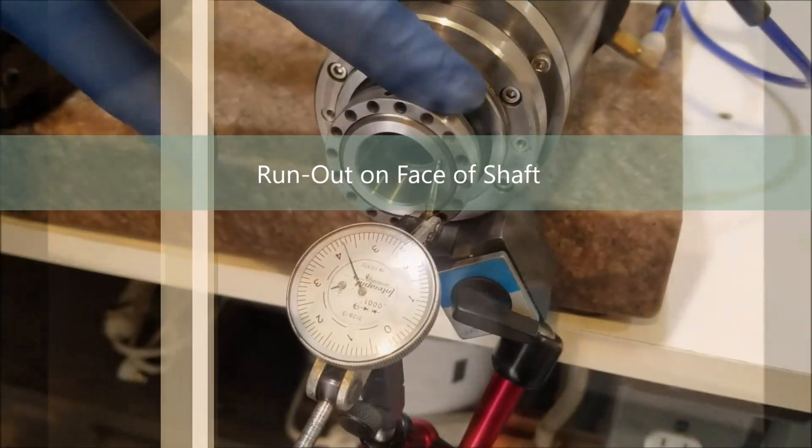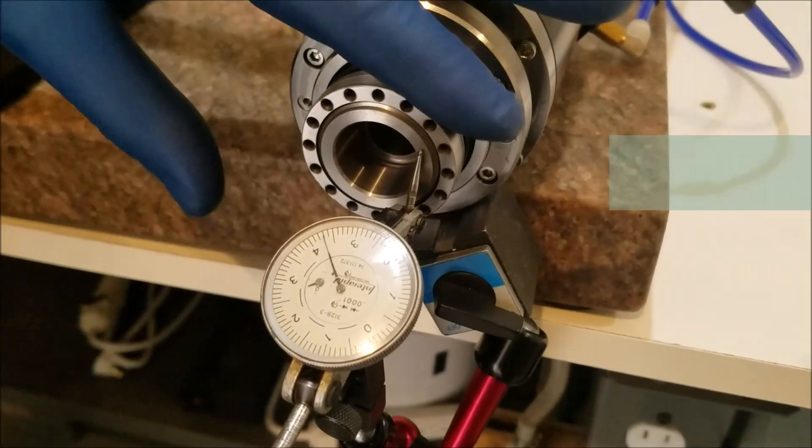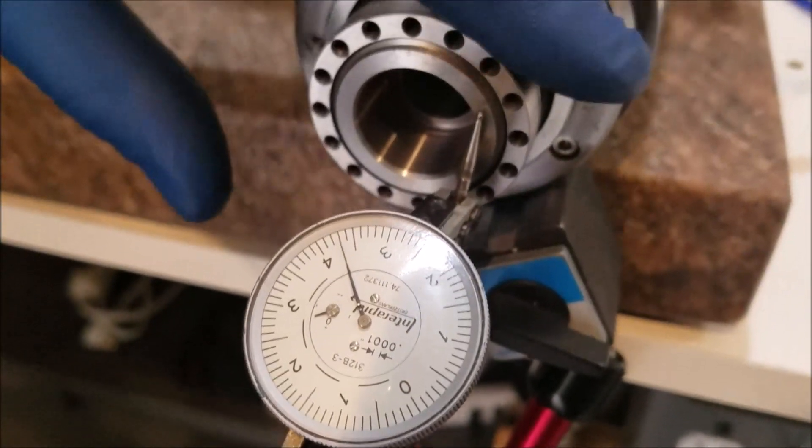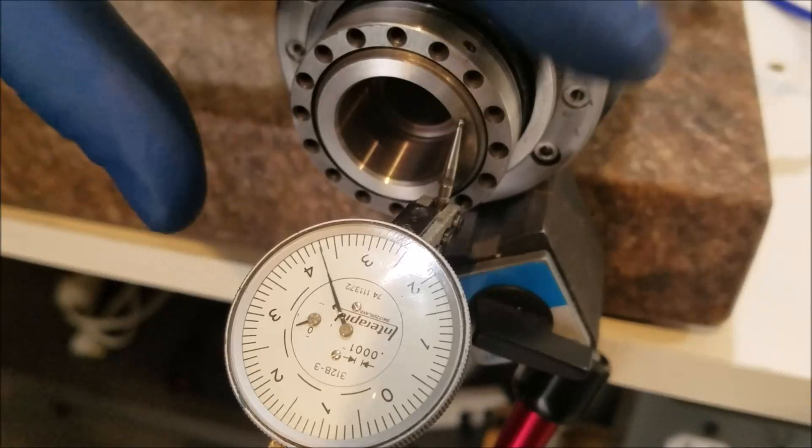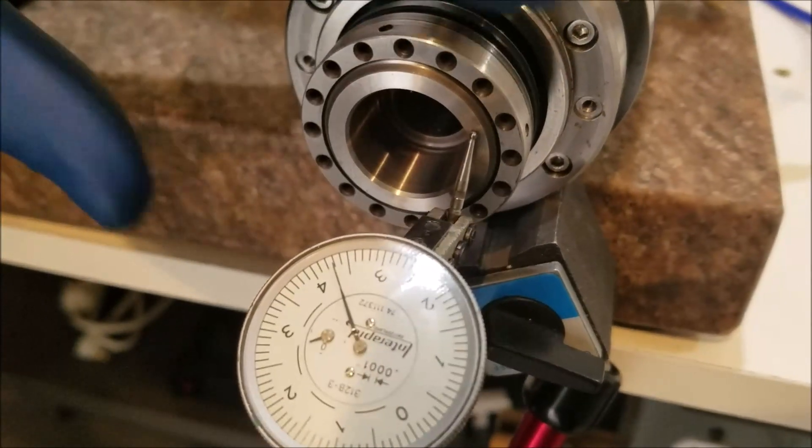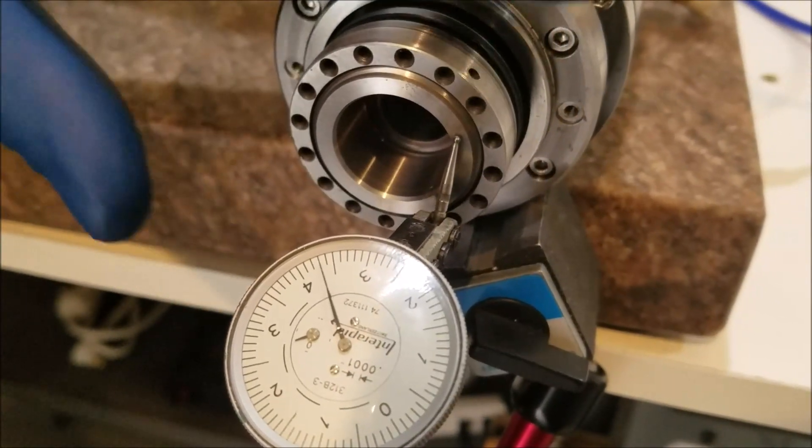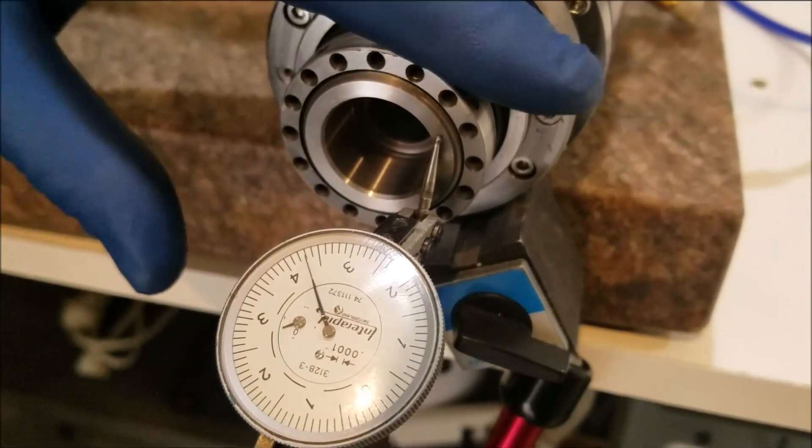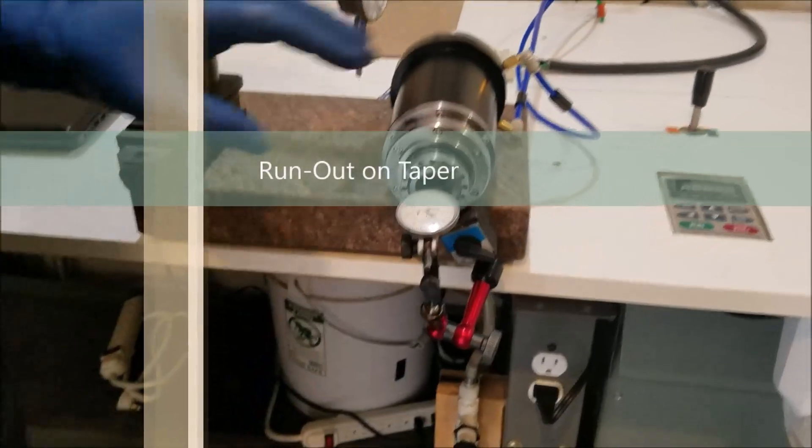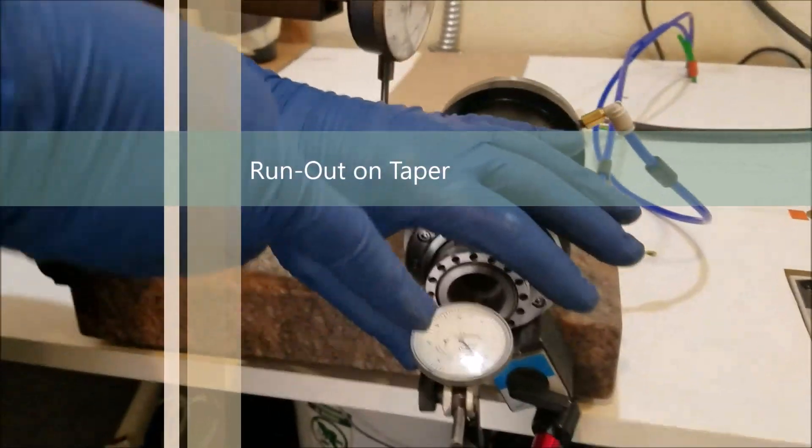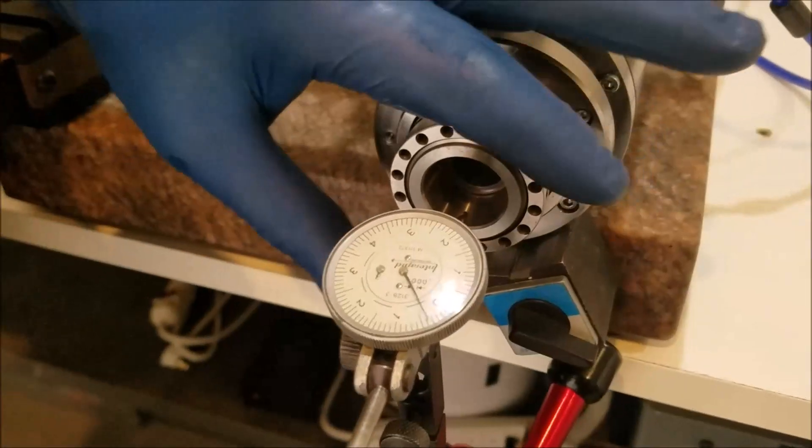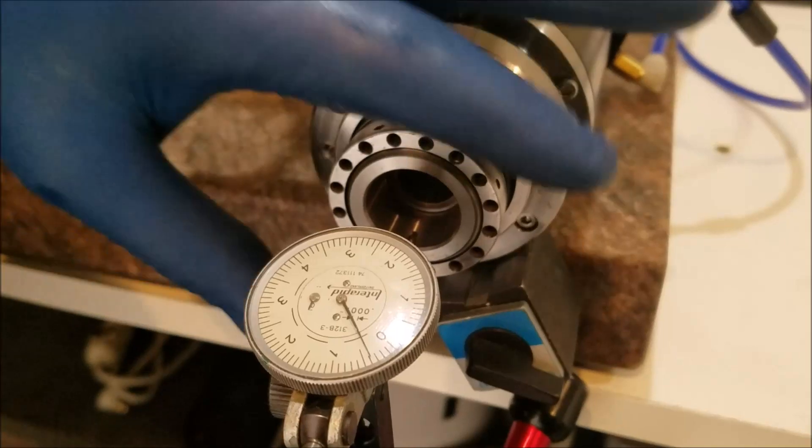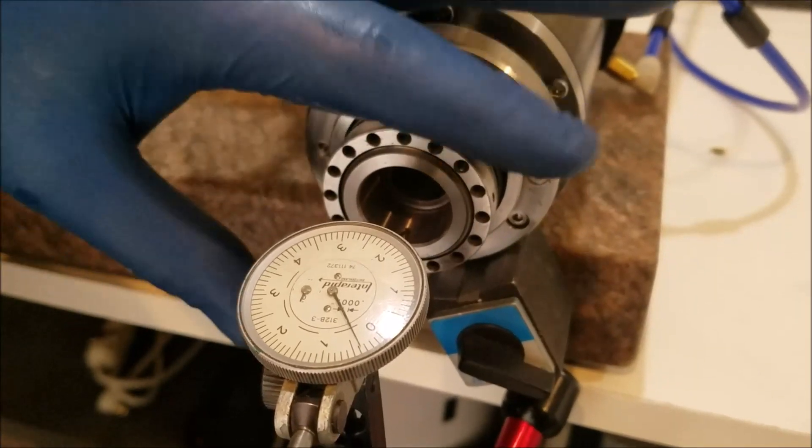This is the run-out on the face of the shaft where the HSK 2 holder shoulder will meet the shaft. You can see we have less than 1 tenth run-out, probably 20 to 30 millionths of an inch run-out here, which is really good. You can see that right there, and this is really good.